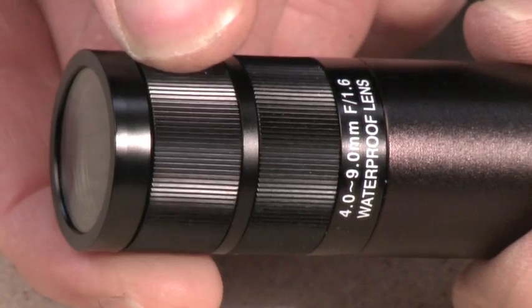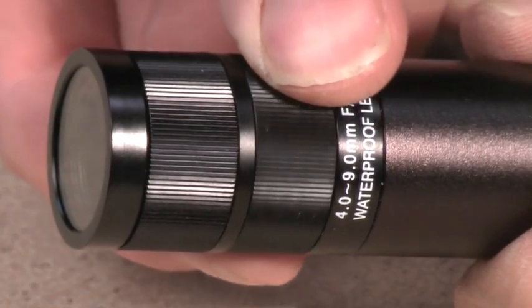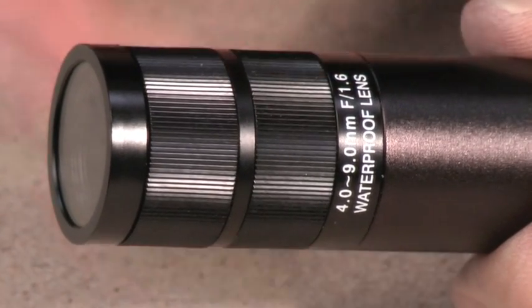To adjust the zoom and the focus of the camera, simply turn the two rings on the end of the camera body.